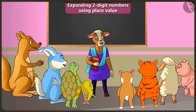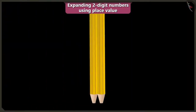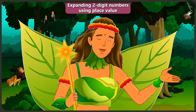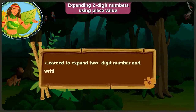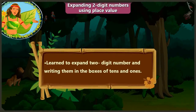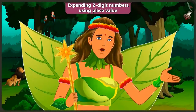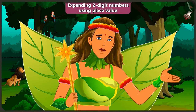Very good. So children, in this video you have learned to expand two-digit numbers by using place value, which means writing in the box of tens and ones. Now in the next video, we will understand expanding two-digit numbers using place value through examples in a better way.